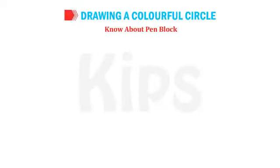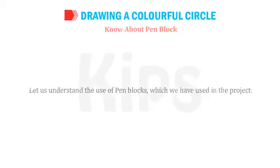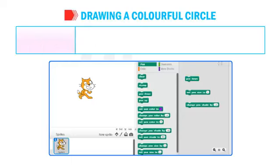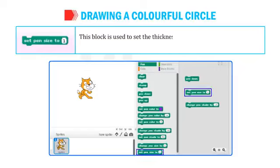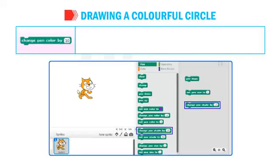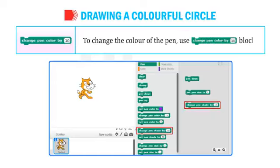Let us understand the pen blocks used in the project. Pen Down: this block draws a line as the sprite moves on the stage. Set Pen Size to 1: used to set the thickness of the pen to a specific number, which you can change by typing in the number box. Change Pen Color By 10: use this block to change the color of the pen.